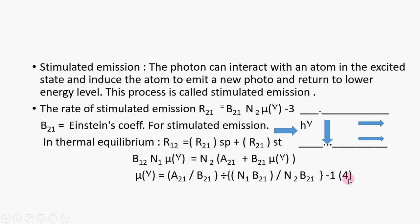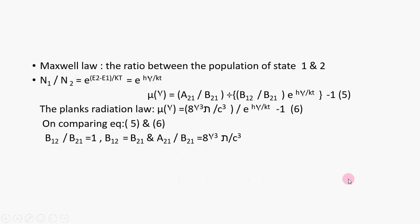Maxwell law: the ratio between the population of state 1 and 2, N1 / N2 = e^(E2-E1)/kT = e^hν/kT. μ(ν) = (A21 / B21) ÷ ((B12 / B21) e^hν/kT) - 1 equation 5. Now put the value N1 upon N2 in equation 4 and we get equation 5.